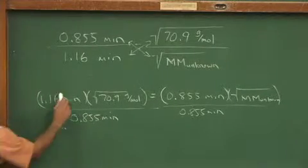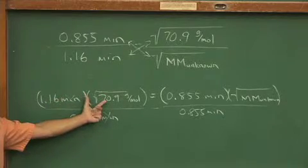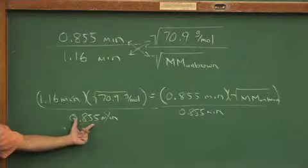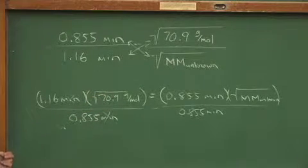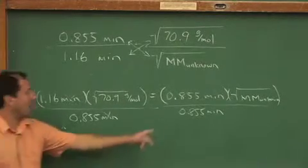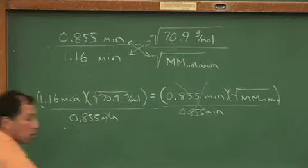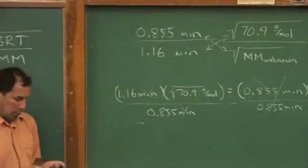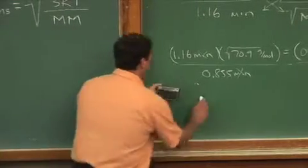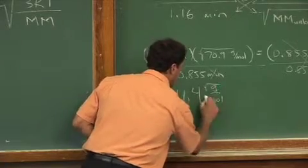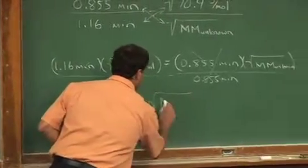Divide both sides by 0.855 minutes. On the left side, the units of minutes cancel, so I'm going to put x's through the minutes here. Now on your calculators, and I'll do this in just a moment, we're going to go 1.16 times the root of 70.9 divided by 0.855. And the units are actually going to be square root of grams divided by square root of moles, because of that root sign. And I don't know what the physical significance of that is, but we're in between steps, and it's going to work out okay, trust me. On the right side, by design, those 0.855 minutes cancel, and we end up with the root of the molar mass of the unknown. So, on the left side of this equation, my calculation is going to be 1.16 times the square root of 70.9 divided by 0.855. And I come up with this being 11.4 square root of grams over square root of moles, which is nonsense, but that's going to go away. And on the right side, we have the square root of our molar mass of the unknown.